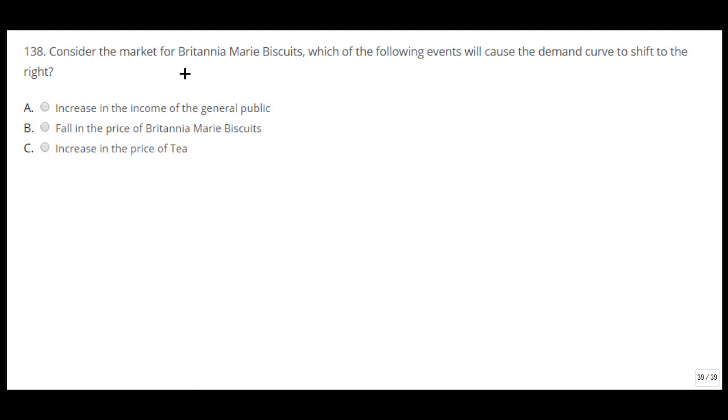Let's see the question. Consider the market for Britannia Marie Biscuit, which of the following will cause the demand curve to shift to the right? So the demand curve is here, it will shift to the right from D0 to D1.